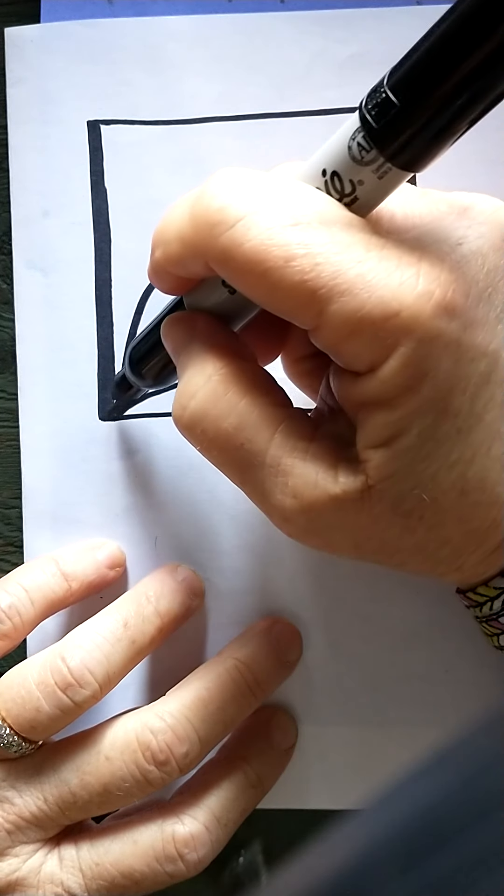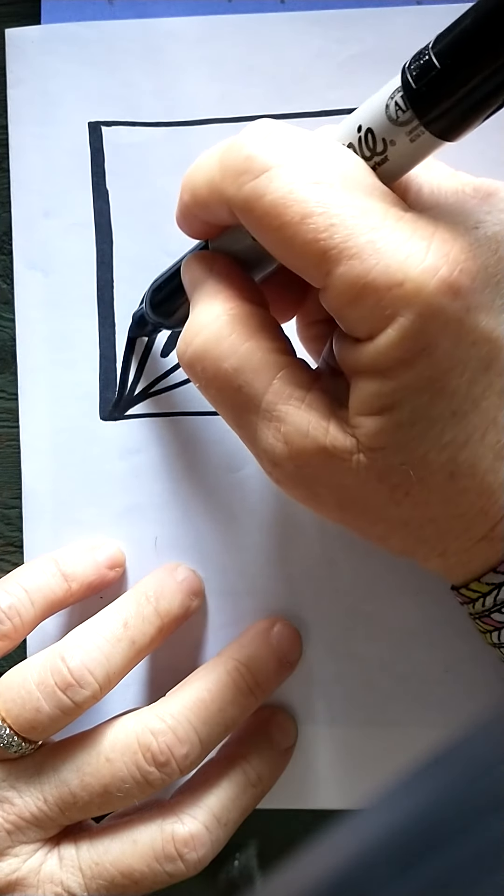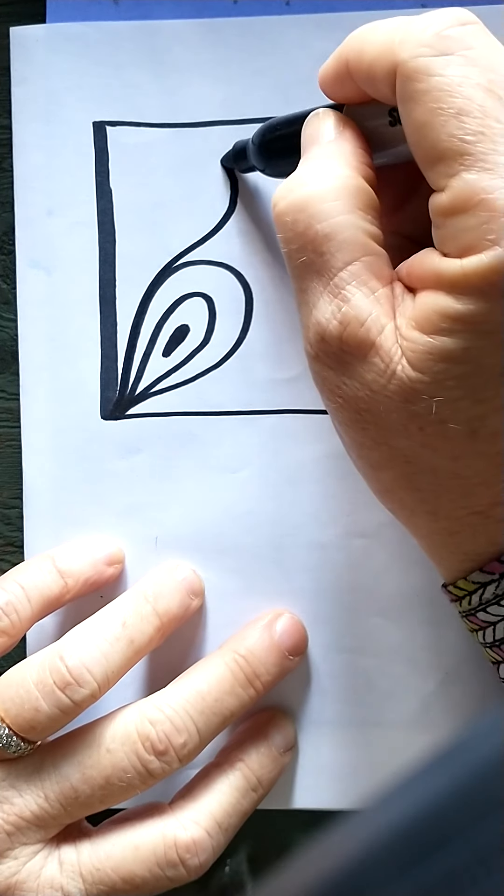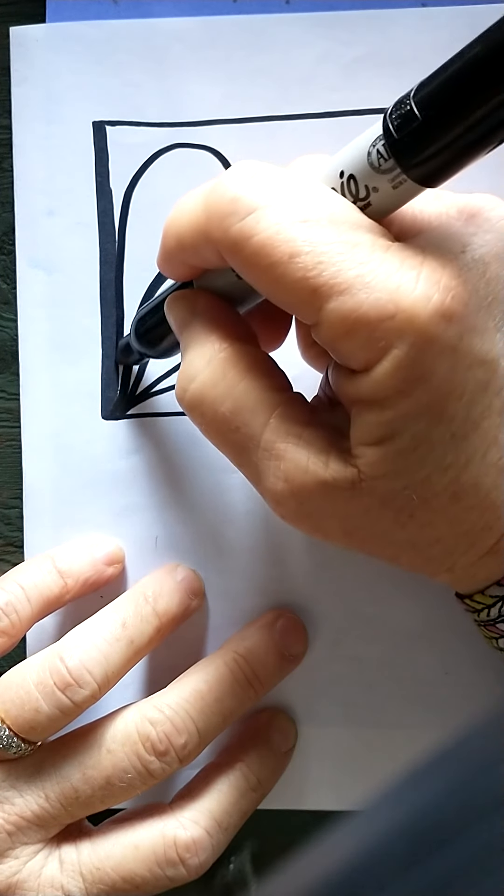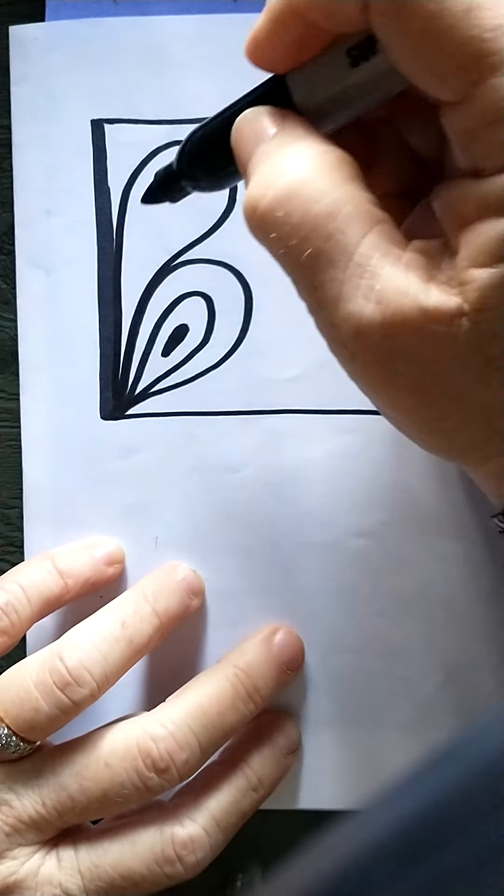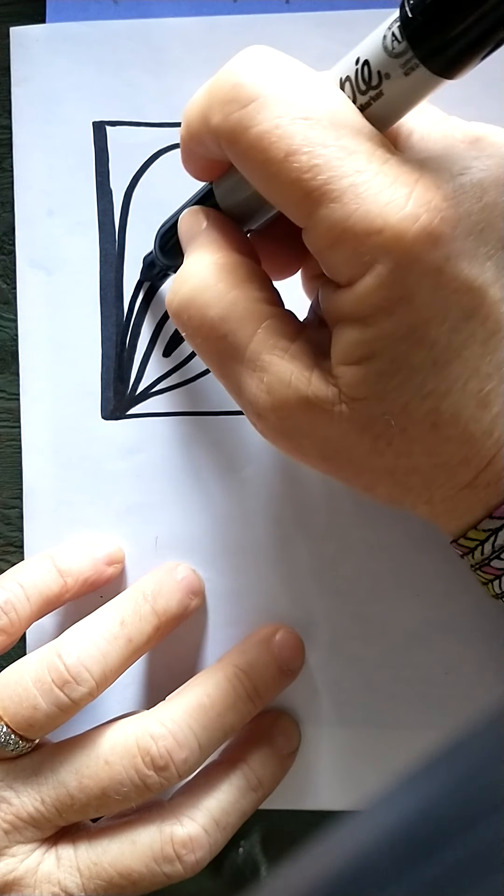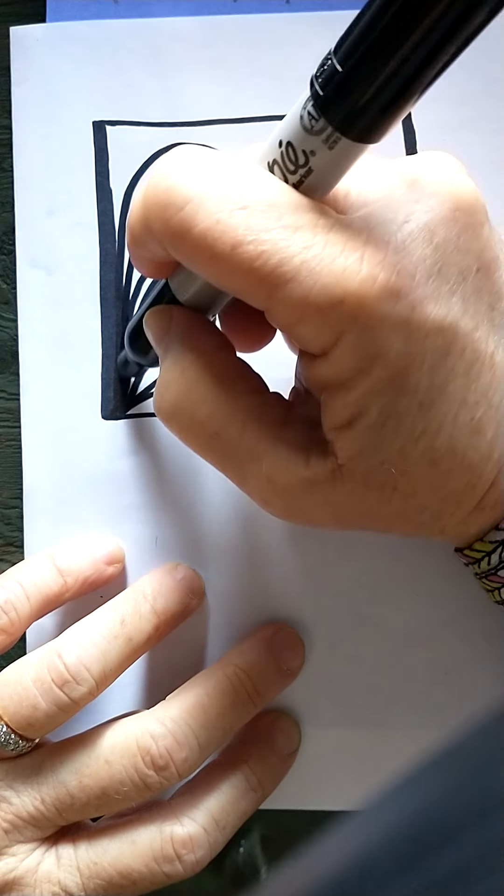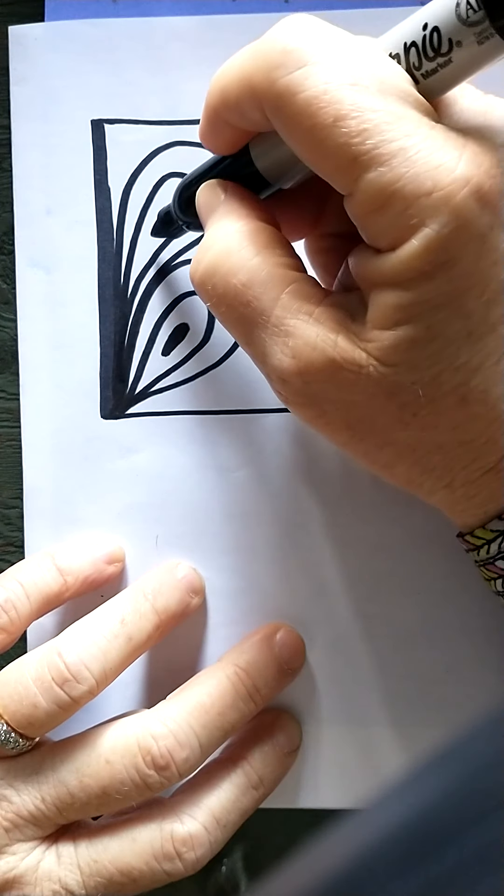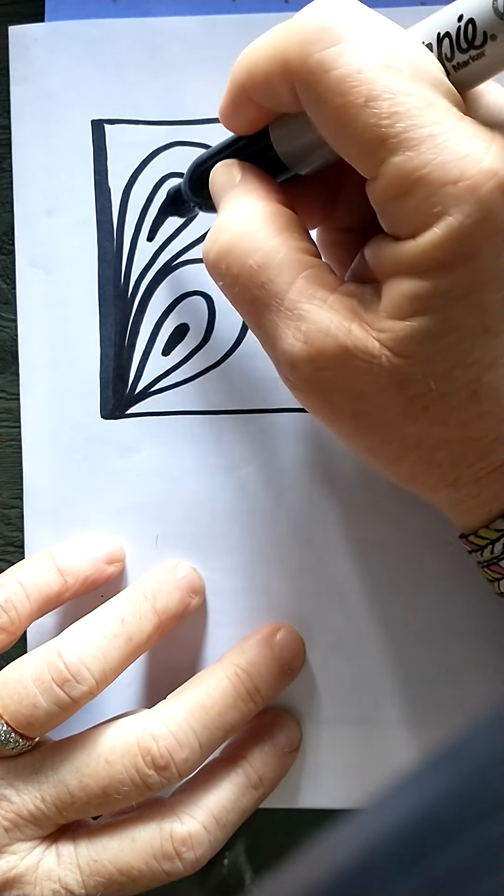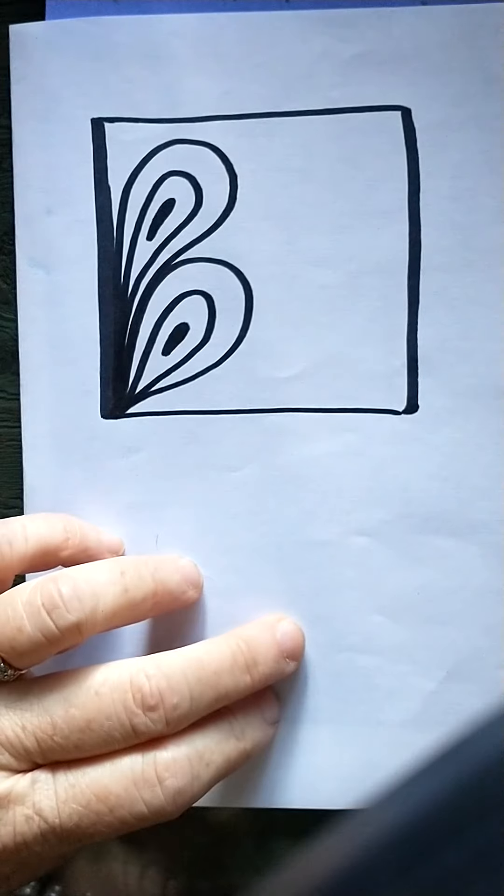Then I'm going to come out from that same corner and make a teardrop that fits somewhat in the space somewhere else. And trace inside that teardrop and give it a solid shape inside.